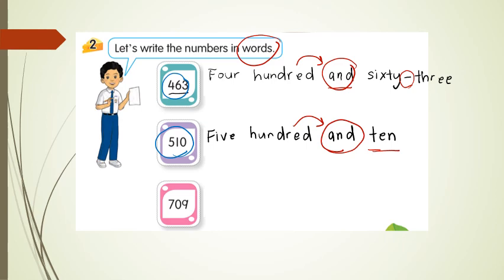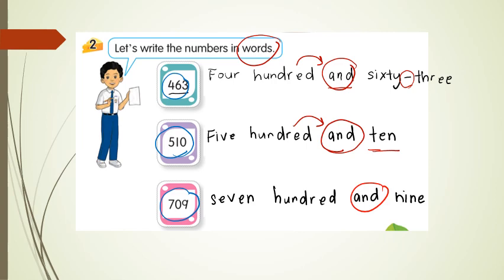Let's look at the third example: seven hundred and nine. How to write it? Seven hundred and nine. You must put 'and' after the word 'hundred' and then write 'nine.' We don't need a hyphen because the word is just one word.